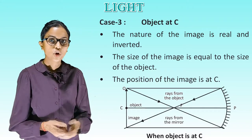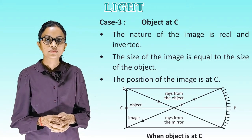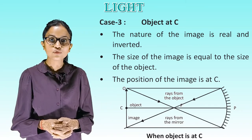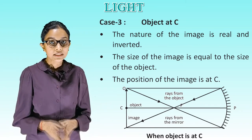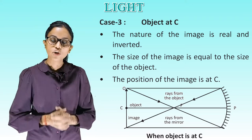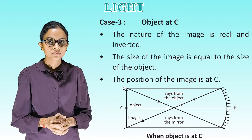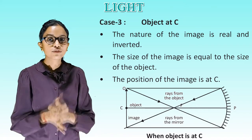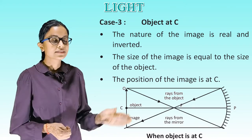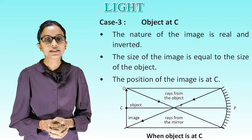Case 3 — object at C: the nature of the image is real and inverted. The size of the image is equal to the size of the object. The position of the image is at C. This is the diagram showing the object at C.